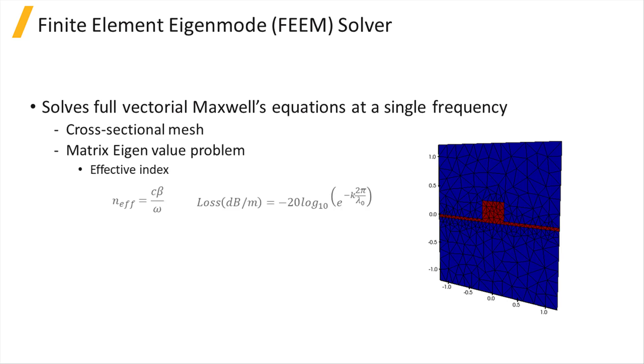Maxwell's equations are then formulated into a matrix eigenvalue problem and solved using sparse matrix techniques to obtain the effective index and propagation loss of the waveguide modes. Note that the mode loss can be calculated from the imaginary part of the effective index, K.